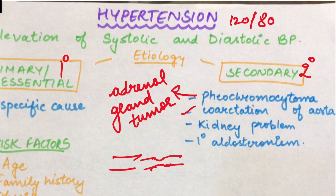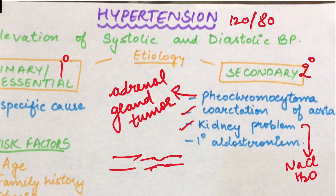Next is kidney problem. Maanlo kidney mein problem aa gai hai. Pehle sodium chloride aur water ki excretion ho rahi thi, lekin ab sodium chloride body mein zyada retain ho raha hai. Us ki wajah se blood volume increase ho jaata hai, kyunki sodium chloride ki level badh gai hai. Blood volume increase hoga toh blood pressure bhi badh jayega.